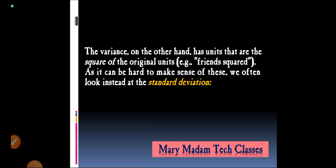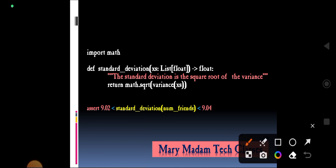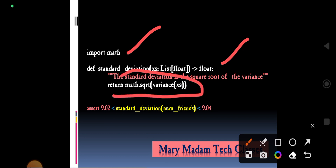The variance has units that are the square of the original units — for example, friends squared. Since this can be hard to interpret, we often look instead at the standard deviation. To calculate the standard deviation, we import math. The function takes a list x's of floats, returns a float, and is computed as math.sqrt of variance(x's).